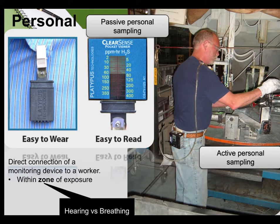We have some new definitions here. Personal sampling occurs in the breathing zone or hearing zone. Active sampling means a pump is actively pulling air through some form of sampling media, such as a filter cassette. Passive sampling does not require a pump or calibration — it is also direct reading. We can directly get our results from this type of personal monitor. Personal sampling is a direct connection to monitoring a worker within that zone of exposure.